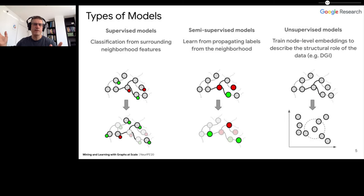The types of models we support - these are scenarios that we see internally. Supervised models where you may have a graph, and the graph has features on its nodes, and a subset of nodes has ground truth labels. We want to be able to infer based on local network structure what the label should be.